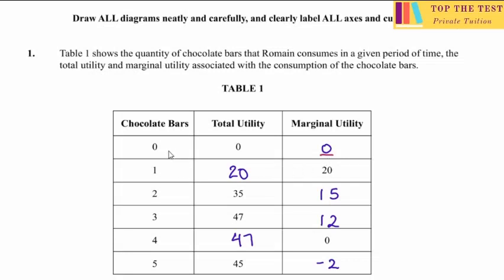As you move from consuming 0 to 1 chocolate bar, the marginal utility was 20 — it went from 0 to 20. So the total utility will also be 20, because you were not consuming anything before. The TU and MU are the same when you move from 0 to 1 unit.